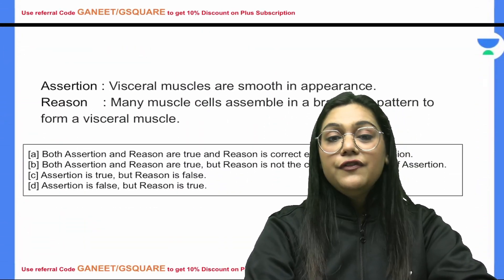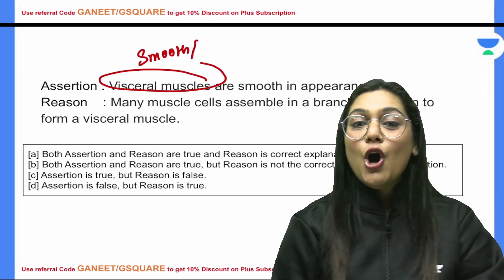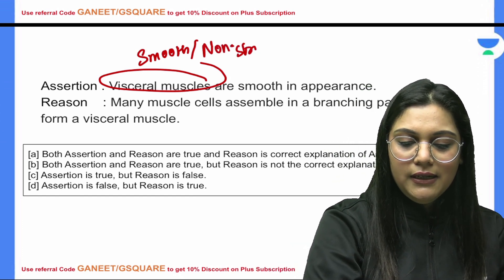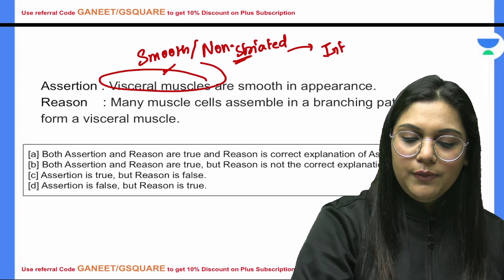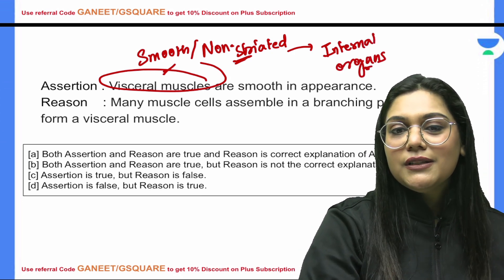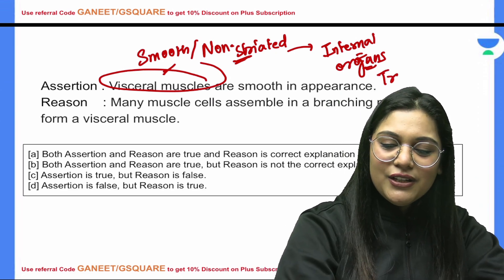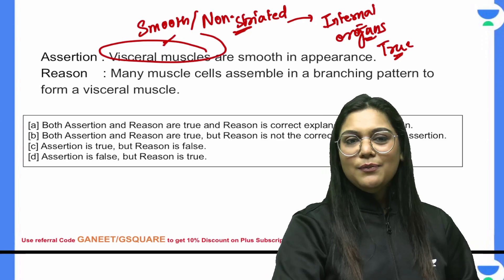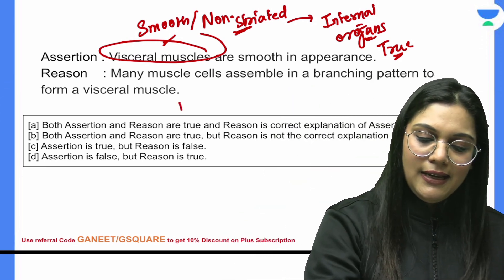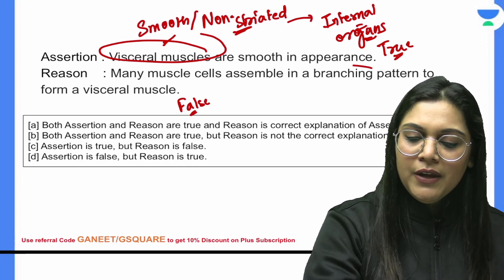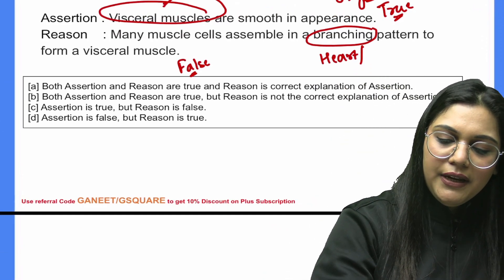Question 4: Visceral muscles — another name for smooth muscles, also called non-striated muscles. These muscles are present in our visceral/internal organs and are smooth in appearance, not striated — so the assertion is true. The reason states that many muscle cells assemble in a branching pattern to form a visceral muscle — this is false, because the branching pattern belongs to cardiac muscles, not visceral muscles.